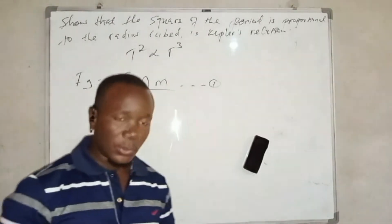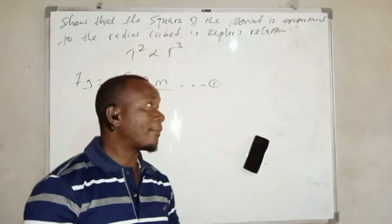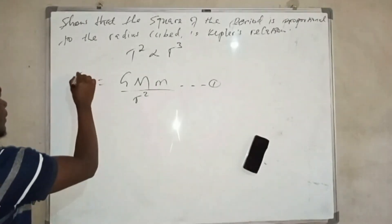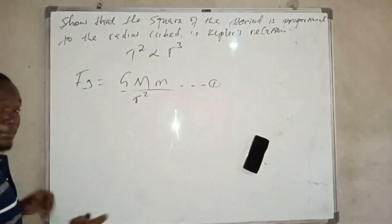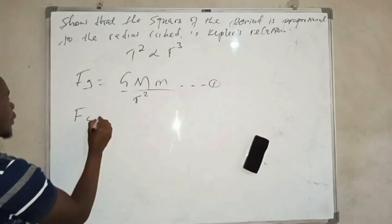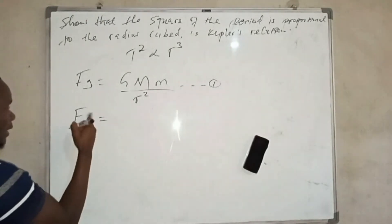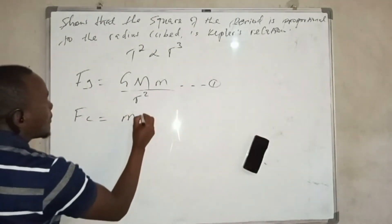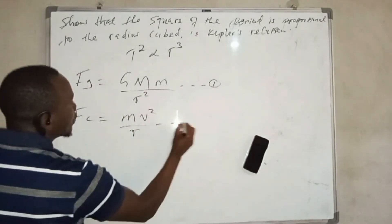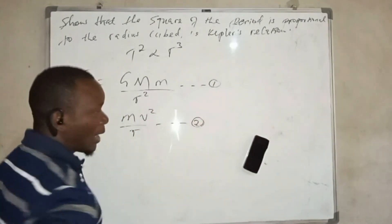We also know that the centripetal force — the force experienced by something moving in a circular path — is Fc, which is equal to mv² over r. This is equation number two.